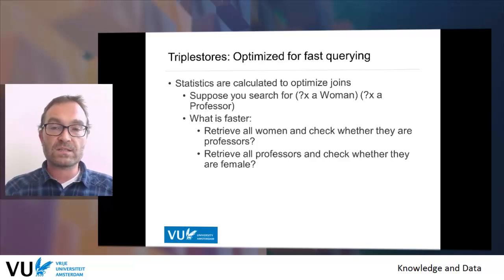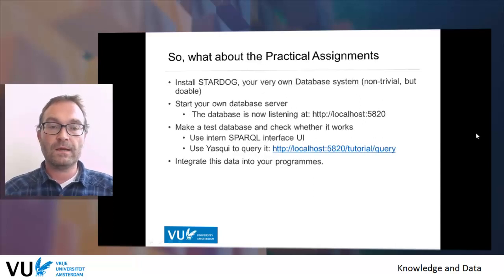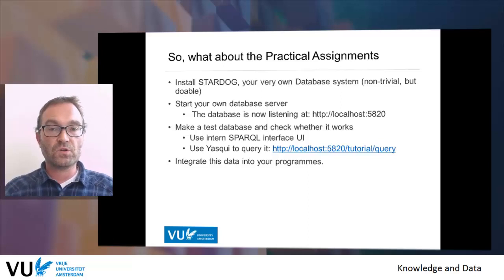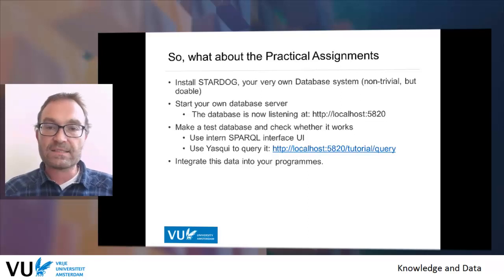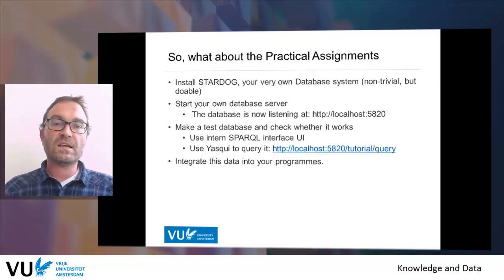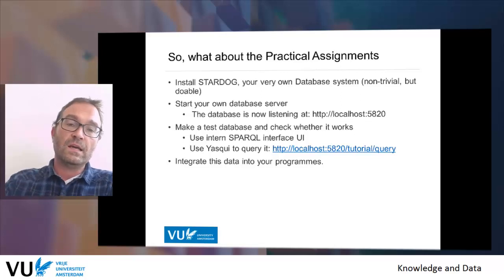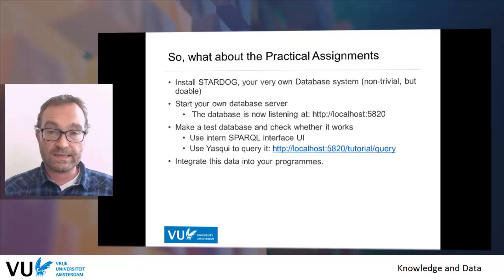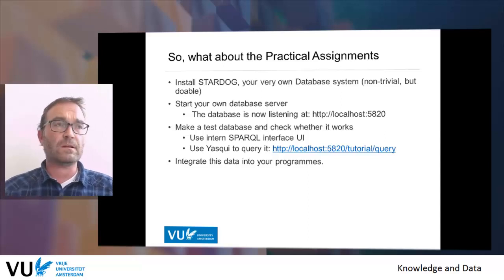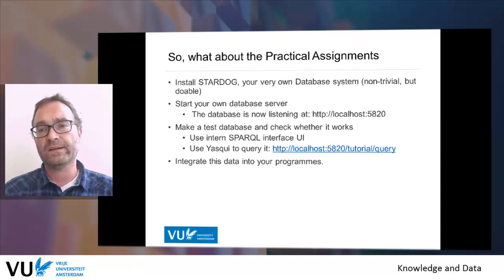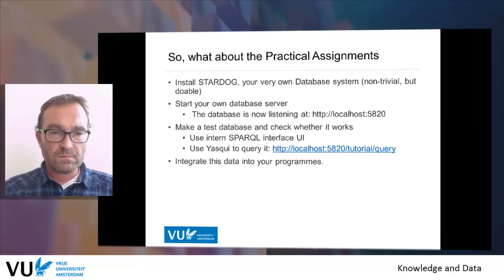These query plans are really essential to make queries scalable. So those were the three things you need to know about graph databases. Practically, the only thing you need to know is that you can upload data sets to a triple store and ask queries against them in the very rich SPARQL query language. For the practical assignment, the first thing you will have to do is install Stardog, which is your own database system. From today or whenever you start, you will be your own database owner and administrator. It's not trivial because you need to set paths — if you use Windows it can be rather painful, but it's doable. If you have questions, just ask them on Piazza and we'll sort it out.